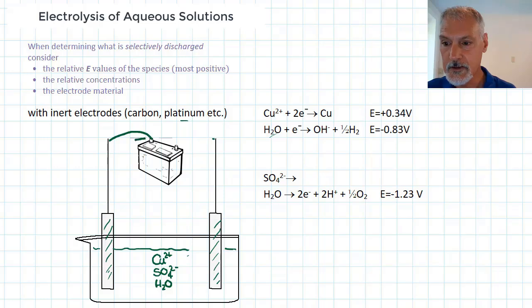So hooking up the terminals of my battery, the negative terminal is over on this side, so electrons will move down in this direction. So reduction will occur over here. This then will be my cathode.